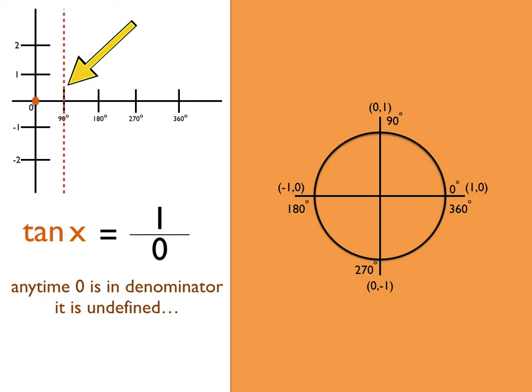Next is at 180 degrees. That's negative 1, 0. We end up with 0 over negative 1, so that's 0. We end up with another point. These points signify where our tangent function will cross the x-axis.